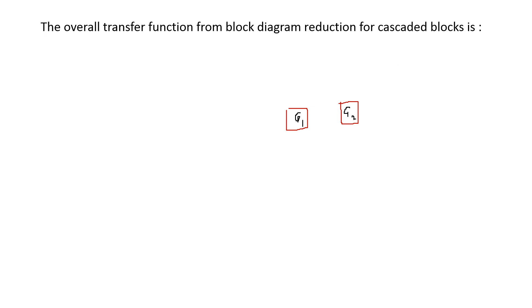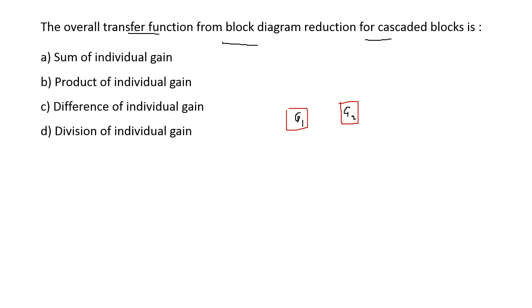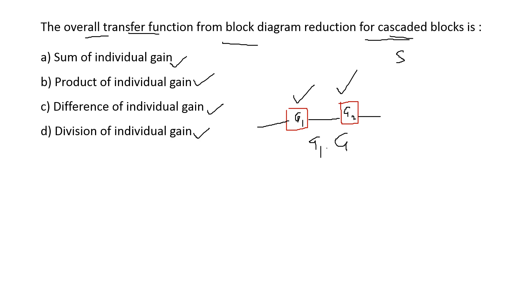Next: the overall transfer function from block diagram reduction for cascaded blocks is — options are: sum of each block gain, product of each block gain, difference of each block gain, division of each block gain. Cascaded blocks are blocks connected in series. The overall transfer function is the product of individual block gains — G1 times G2. So option B is the right answer.